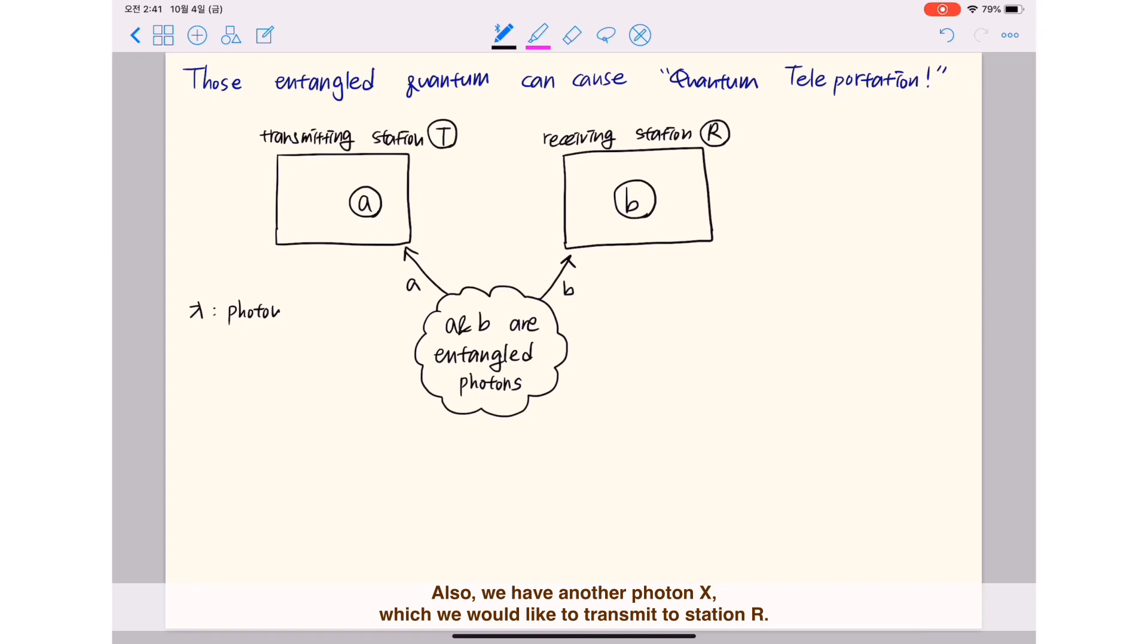Also, we have another photon X which we would like to transmit to station R. X and A are also entangled, then states B and X are identical.